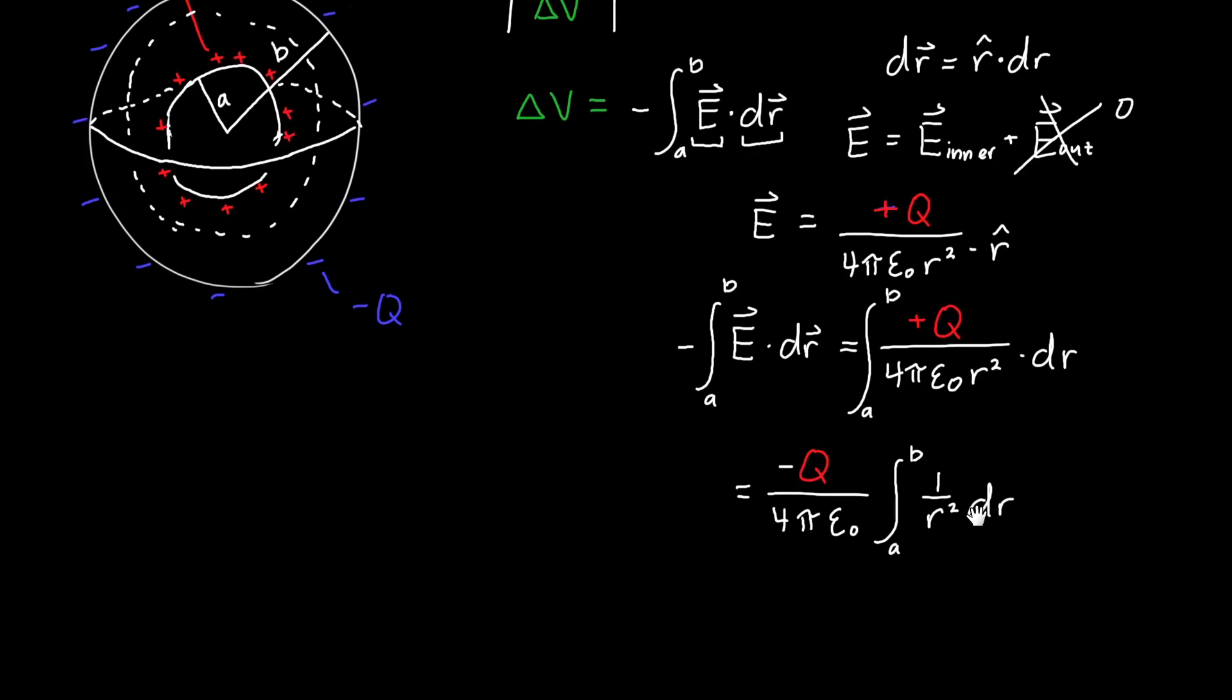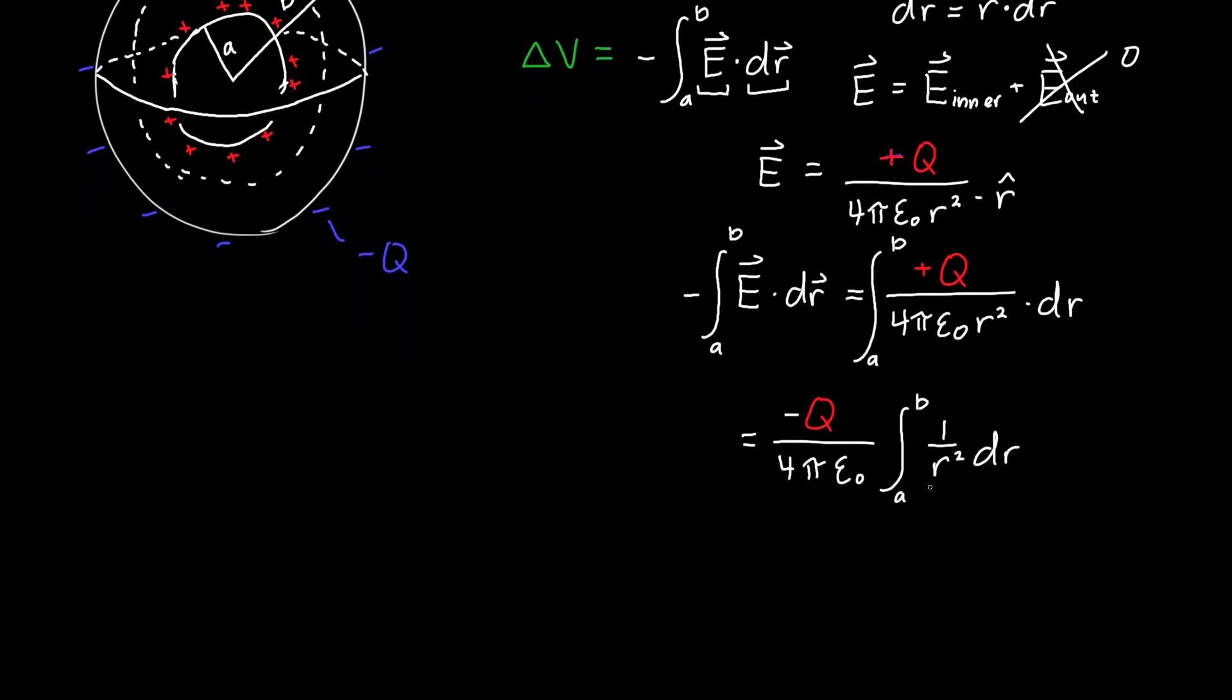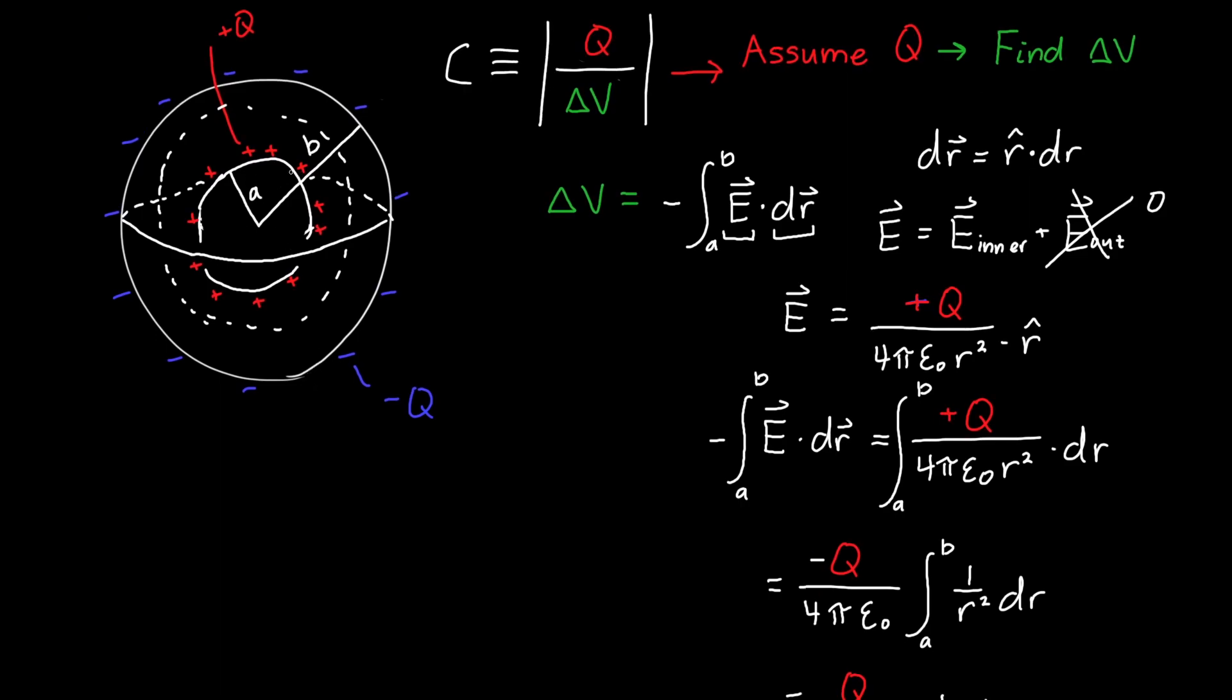If you do this integral, the indefinite integral is just negative 1 over R. So we're left with Q over 4π epsilon naught times 1 over R, because the two negative signs cancel.